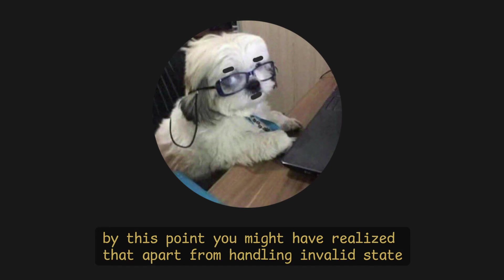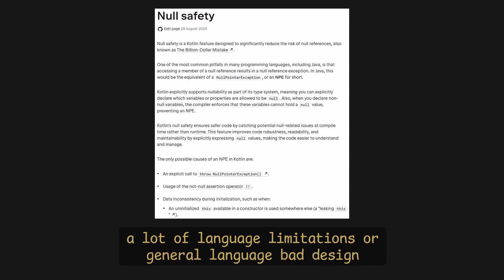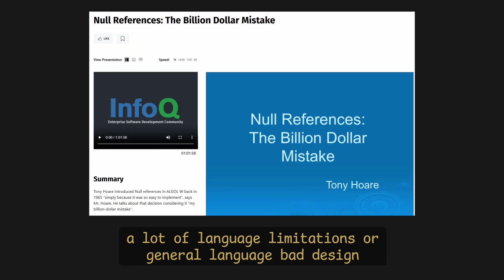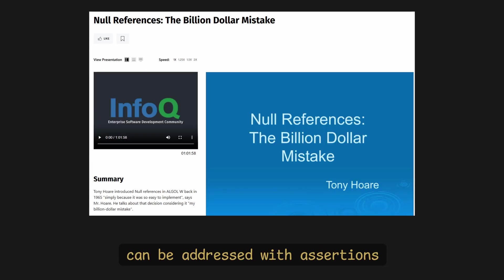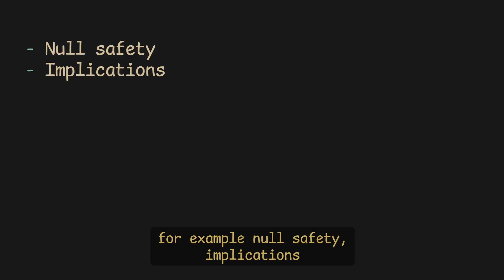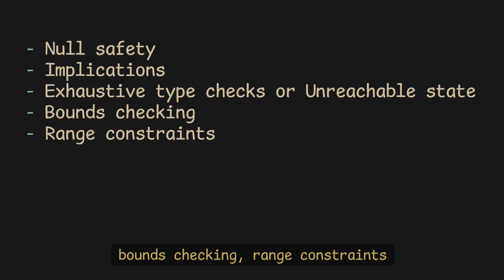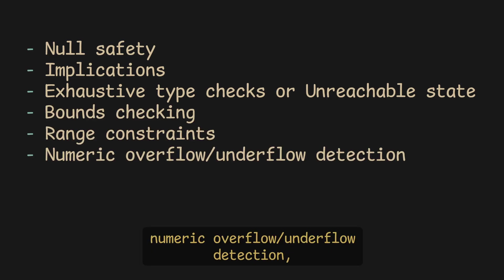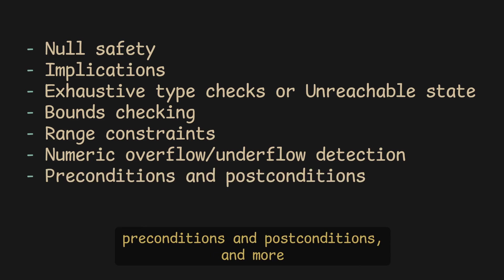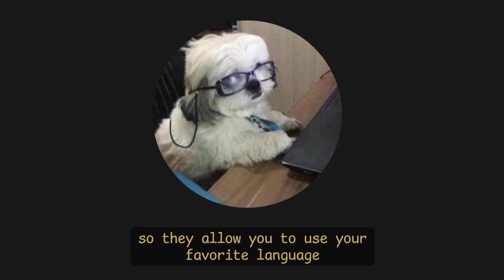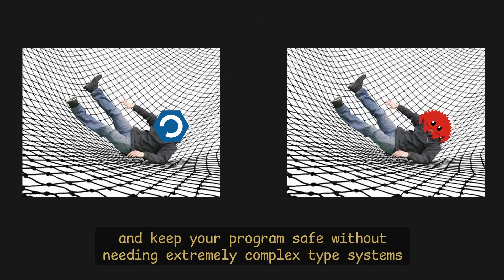By this point, you might have realized that apart from handling invalid state, a lot of language limitations or general bad language design can be addressed with assertions — for example: null safety, implications, exhaustive type checks or unreachable state, bounds checking, range constraints, numeric overflow/underflow detection, preconditions and postconditions, and more. So they allow you to use your favorite language and keep your program safe without needing extremely complex type systems.